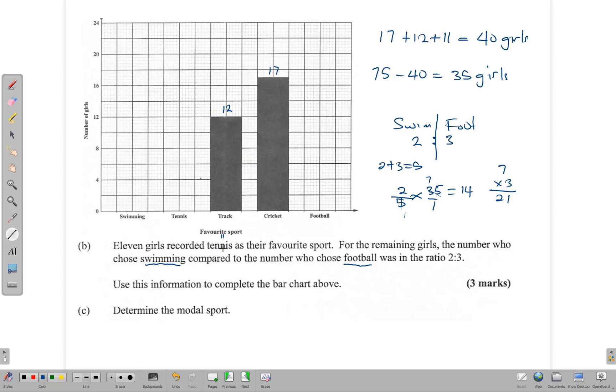For tennis we have 11, so let's draw that bar. That bar should be 11, so it's going to be halfway there. The bar looks a little bit low, let's just top it up a little bit, so it's halfway between there. That's 11.